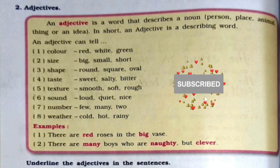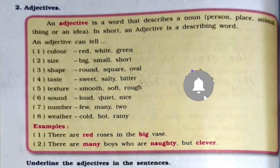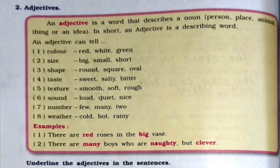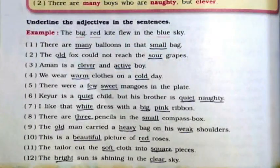Now, next questions are the adjectives. You need to see the adjectives which are already given. The definition: an adjective is a word that describes a noun. In short, an adjective is a describing word — whichever word is telling you how the noun is, what is the quality of the noun, that means an adjective. Then you have to complete the exercise given below.